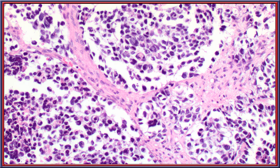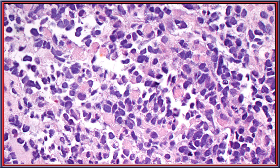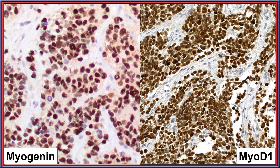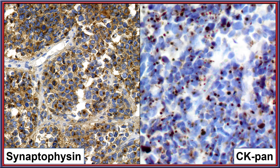On high power, there is an alveolar architecture with clinging cells at the periphery and dilapidated cells in the center. Rhabdomyoblasts are easily identified with eccentric eosinophilic cytoplasm pulled off from the nucleus. Desmin is strongly positive in the cytoplasm of most neoplastic cells, while myogenin and MyoD1 confirm the myogenic nature. A panel of immunohistochemical studies is necessary to accurately classify these neoplasms.